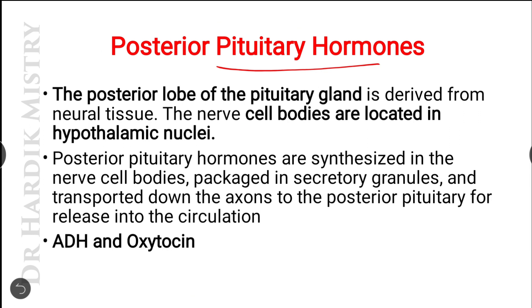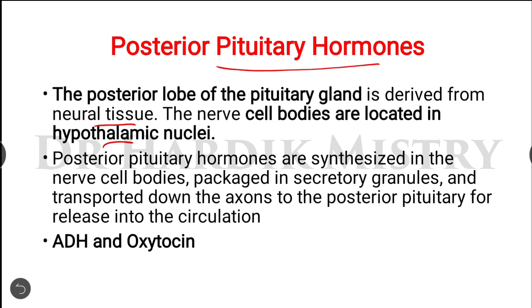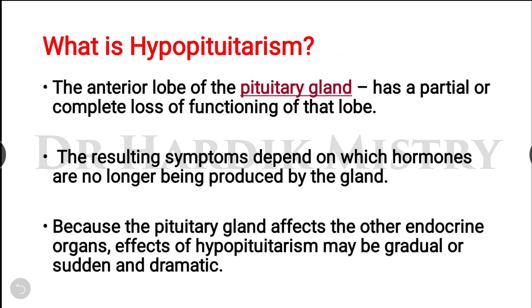The posterior lobe of the pituitary gland is derived from neural tissue. Cell bodies are located in the hypothalamic nuclei. Posterior pituitary hormones are synthesized in neuron cell bodies, packaged in secretory granules, and transported down the axons to the posterior pituitary for release. They secrete ADH (antidiuretic hormone or vasopressin) and oxytocin.